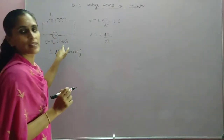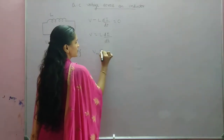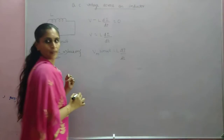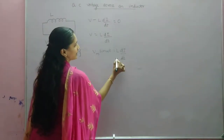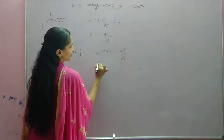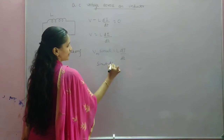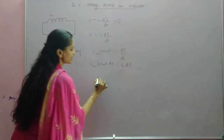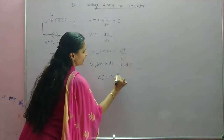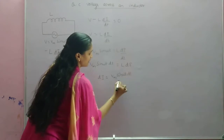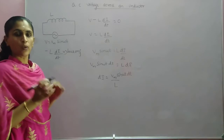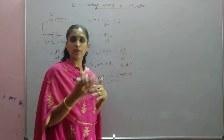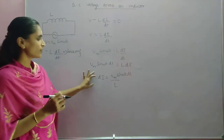So what is V? V is equal to Vm sin(ωt). Therefore we can write Vm sin(ωt) equals L times dI/dt, which gives us dI/dt equals Vm sin(ωt) divided by L. Now we have to get an expression for the instantaneous value of current to determine whether it is in the same phase or whether a phase difference exists. So we can integrate both sides.